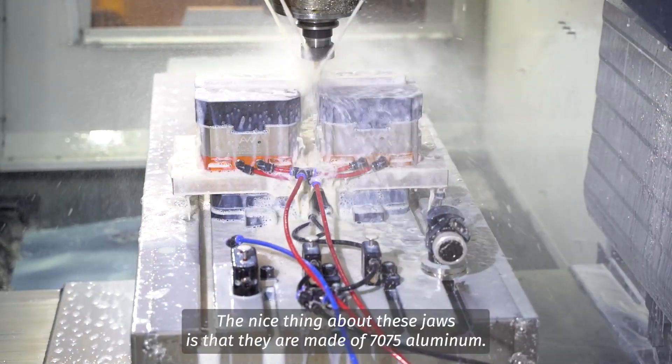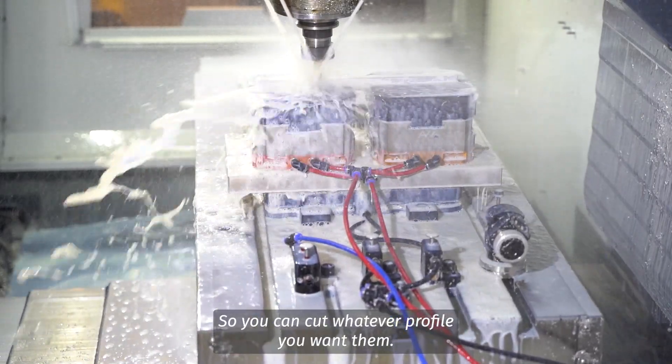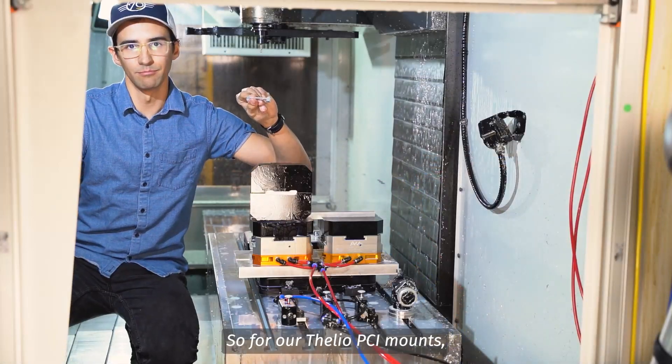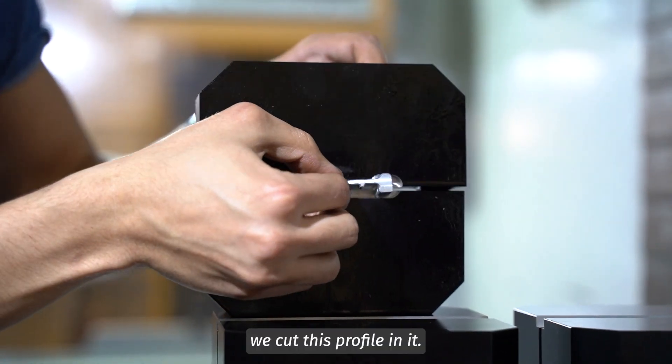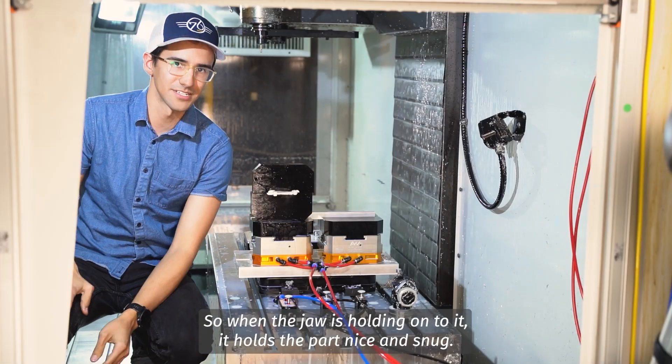The nice thing about these jaws is that they are made out of 7075 aluminum, so you can cut whatever profile you want in them. So for our Thalia PCI mounts, we cut this profile in it, so when the jaws are holding onto it, it holds the part nice and snug.